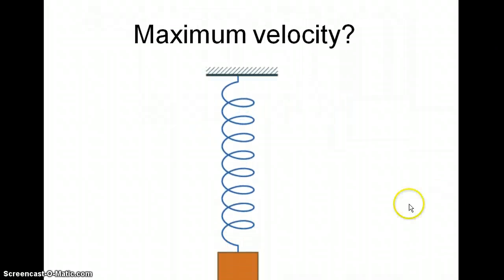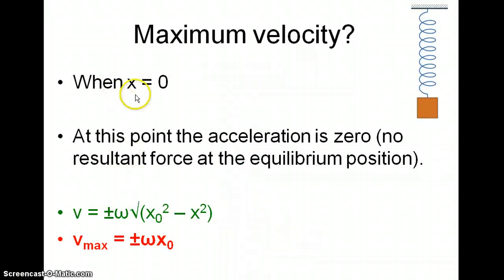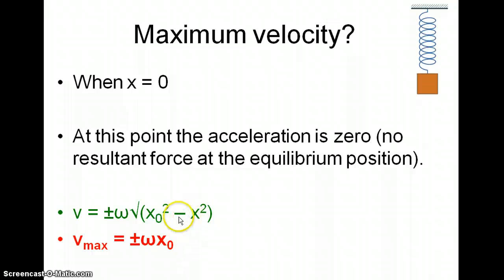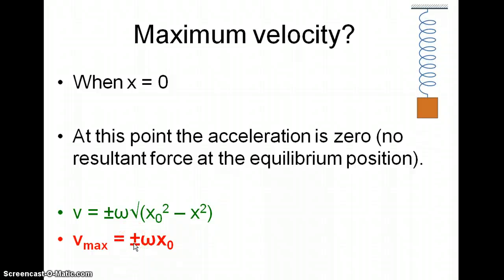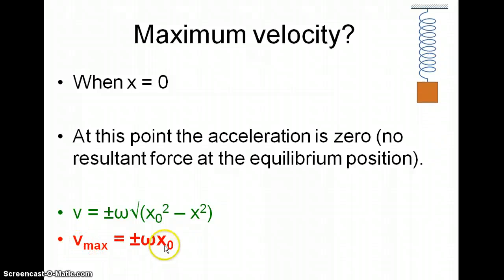Where is the object going fastest? It's going fastest in the middle, at the equilibrium position — i.e., when x equals zero. If we want to calculate the maximum velocity, that's when x equals zero, and x squared is nothing. So we find the square root of x₀ squared, which is just x₀. The maximum velocity is therefore equal to plus or minus omega times x₀, where x₀ is the amplitude. The maximum velocity is proportional to the amplitude.